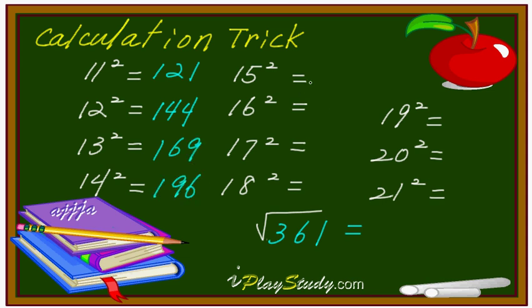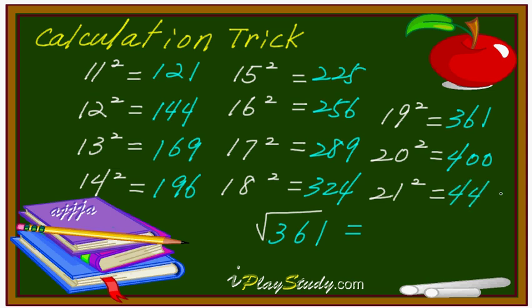Okay, 225, 256, 289, 324. 19 square, 361. What about 20 square? That's easy. 2 times 2 is 4. So, 400. 441. And so on. But you must remember just 11 square all the way up to 19 square. Because we always need this one for our lives. That's why.